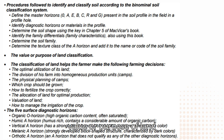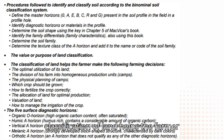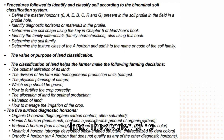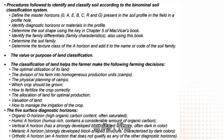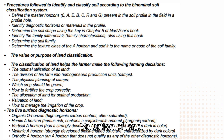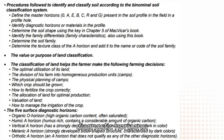Determine the texture class of the A horizon and add it to the name or code of the soil family. The value or purpose of land classification: the classification of land helps the farmer make decisions on the optimal utilization of land, the division of the farm into homogeneous production units or camps, the physical planning of camps, which crop should be grown, how to fertilize the crop correctly, and the allocation of land for optimal production.